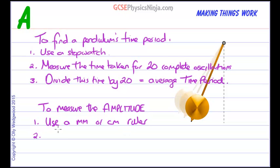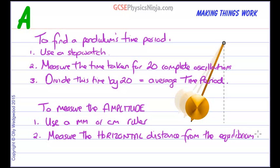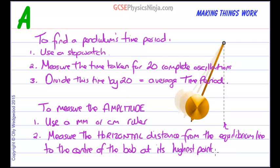And number two, we would measure the horizontal distance from the equilibrium line. And that is this point here, the center point, center of the oscillations where the pendulum would come to rest eventually. So measure the horizontal distance from the equilibrium line to the center of the bob at its highest point. So it would be from the center of the bob to the equilibrium line, and that would be our amplitude.